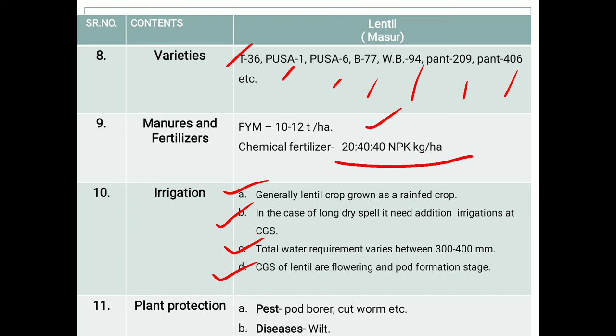Regarding plant protection: the major pests are pod borer and cut worm. In case of diseases, wilt is a major disease risk of the lentil crop.